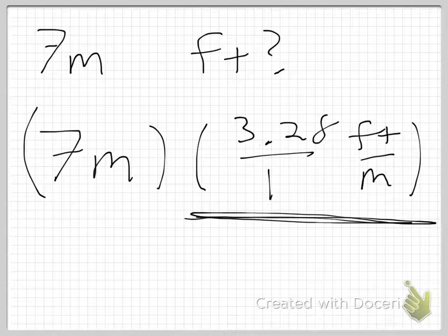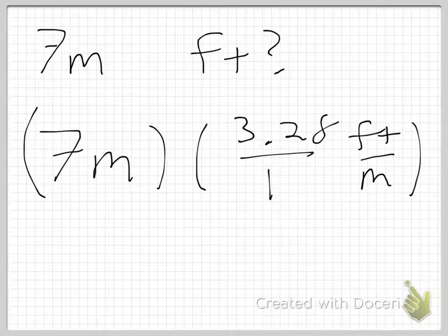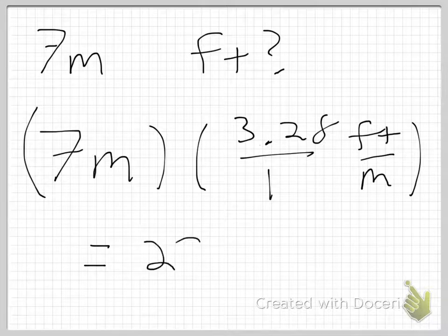What I am going to do here is change the units. This is going to be equal to the numbers. I can just type into my calculator. 7 times 3.28. That gets me 22.96.